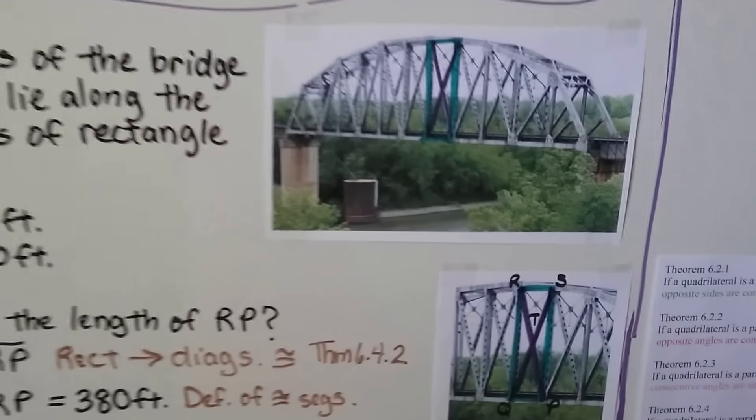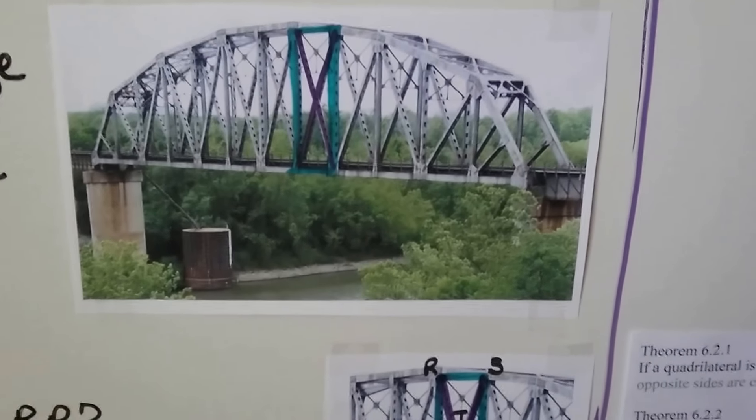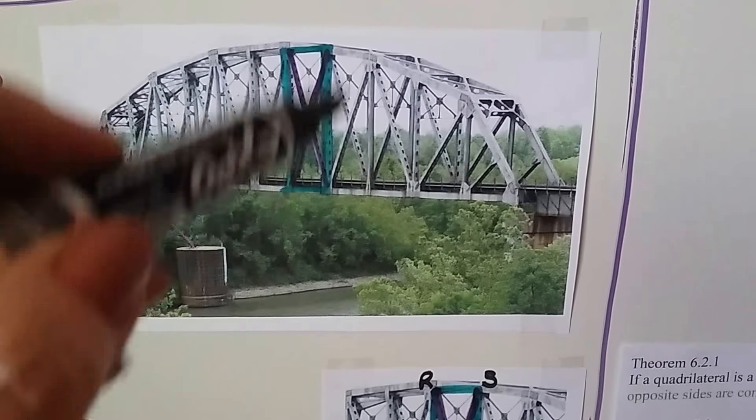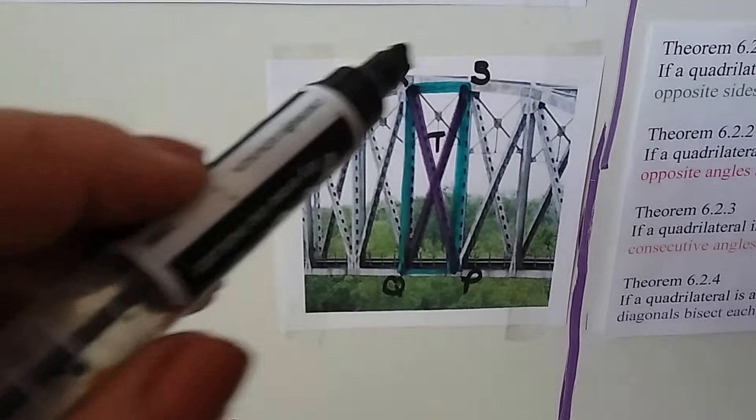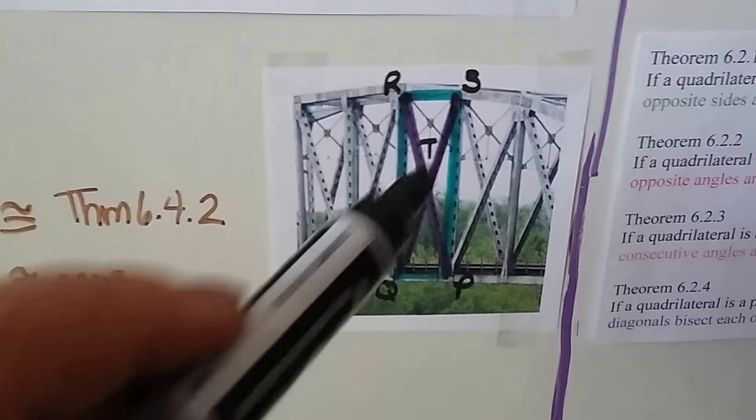Now take a look at this bridge. Look at how the supports are diagonals inside of rectangles. I have a closer view, and I've got it marked Q, R, S, and P, and T there.